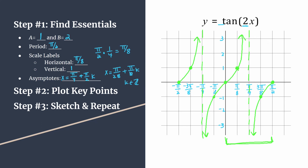You can double check this asymptote using the asymptotes equation from earlier. Just let k be a different integer than zero — let's use negative 1 for the next one to the left. So x equals pi over 4 plus pi over 2 times negative 1, which gives pi over 4 minus pi over 2. Getting a common denominator, rewrite as 2 pi over 4, and we get the asymptote at x equals negative pi over 4. This was three steps to sketch tangent of 2x.